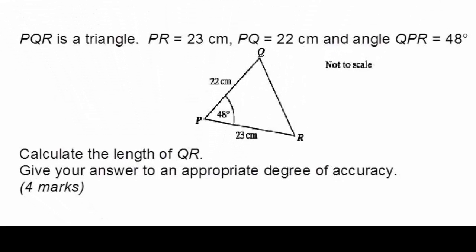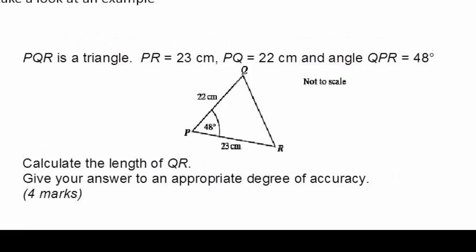Okay, so here we've got a triangle PQR. PR is length 23 centimeters, PQ is length 22 centimeters, and the angle in between them QPR is 48 degrees, and we've got to calculate the length of QR.